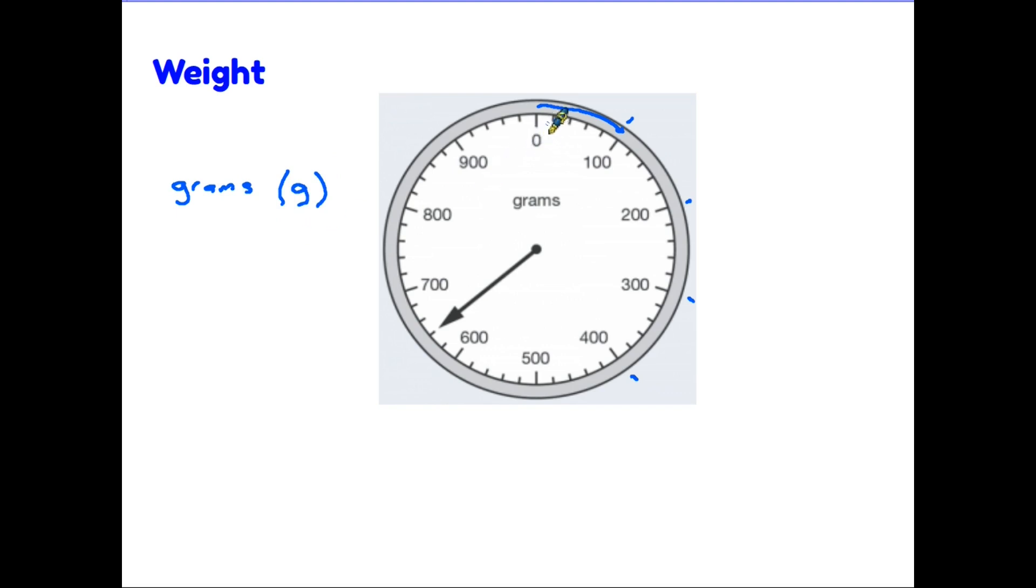Now, again, we need to be careful and have a look at these smaller lines on the scale, such as the ones between zero and 100. There are one, two, three, four, five spaces here. So in fact, 100 grams has been divided into five parts. And we can actually do that sum, 100 divided by 5. And that tells us that each of these small sections is 20 grams.